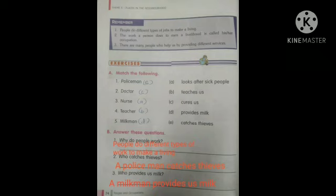First exercise is match the following column. I have marked all the answers. First one, policeman, answer is E, catch thieves. Second, doctor, answer is C, cures us.